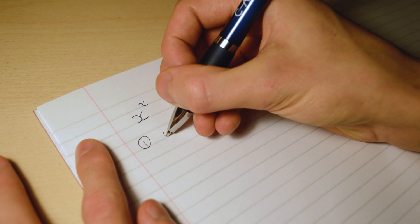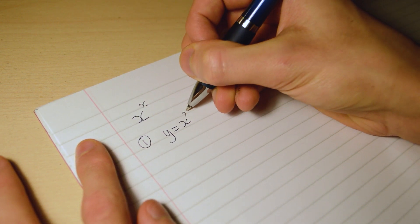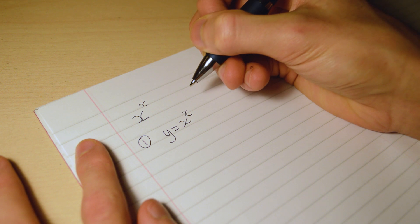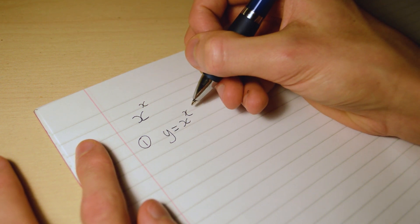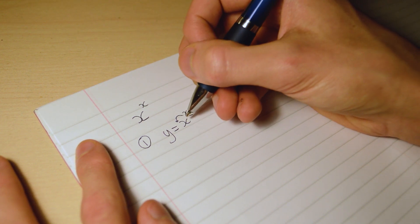So the first method is we're going to let y be equal to x to the power of x. And then what we're going to do is take the logarithm of both sides so we can bring the power down, which is something we can differentiate.